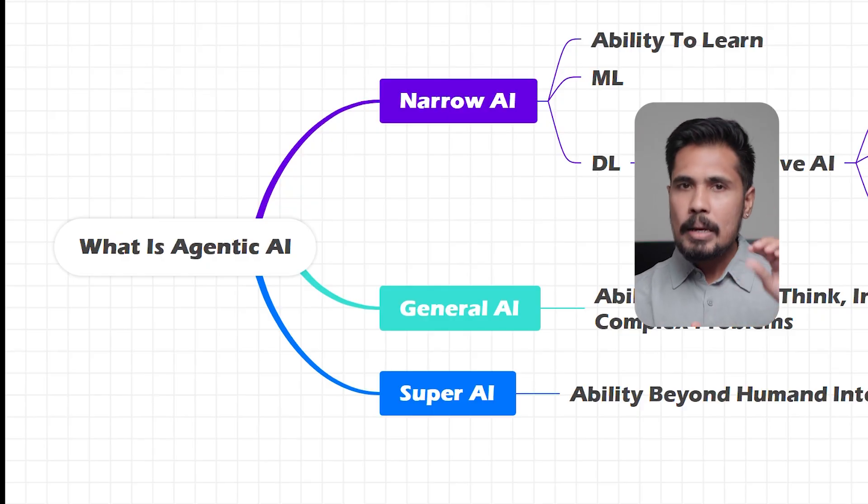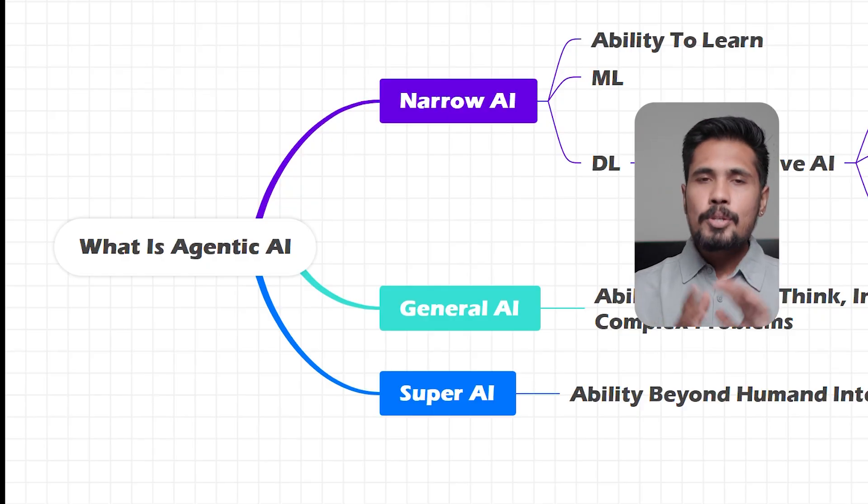There are three types of AI: narrow, general, and super AI. Narrow AI has the ability only to learn. If I give it data, it is able to learn it. It doesn't have any rationality — if I say A for umbrella, it's going to learn A for umbrella. It won't question me. Whatever data you train it on, it's going to learn that. That's why if you're using ChatGPT or Gemini, if the data is bad, it's going to give you bad responses, and if the data is outdated, it'll give you outdated answers. So narrow AI is called the ability to learn.